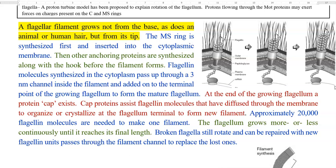At the end of the growing flagellum, a protein cap exists. The main function of this cap is to assist the flagellar molecules that have diffused through the channel, in order to organize or crystallize the flagellin proteins at the terminal point to form a new filament. Approximately 20,000 flagellin molecules are required to make one filament. The flagellum grows continuously until it reaches its final length. Broken flagella still rotate the cells and help in movement, and they can be repaired with newly formed flagellin units that pass through the filamentous protein channel and replace the old and worn-out flagellin units.